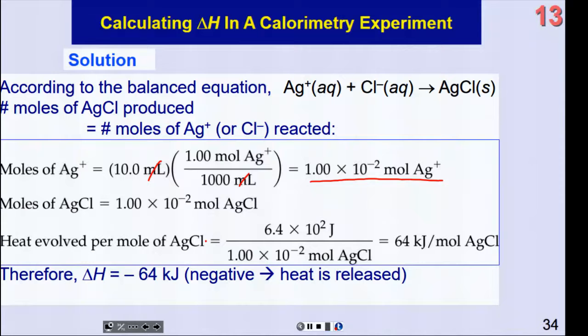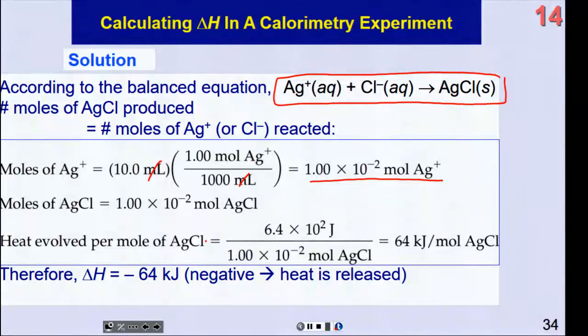So heat evolved per mole of silver chloride in the process shown at the top will be that 640 or 6.4 times 10 squared joules divided by the number of moles of the silver chloride formed, and you plug it into a calculator, and you end up with 64 kilojoules per mole of silver chloride. So we have to decide when we're finished to think about it here. Is the delta H going to be positive or negative? Heat is, in fact, released. It got warmer. So this should be a negative value for delta H. A lot of times you're going to have to stop and think at the end whether something got hot or cold and apply the sign appropriately to your answer.